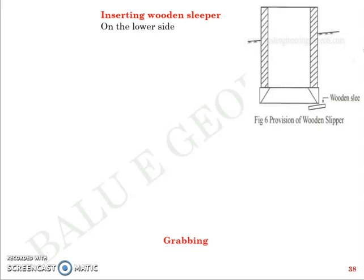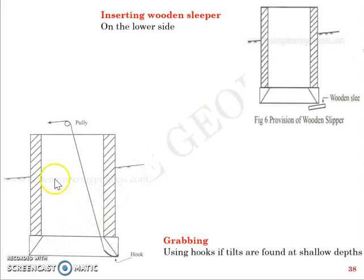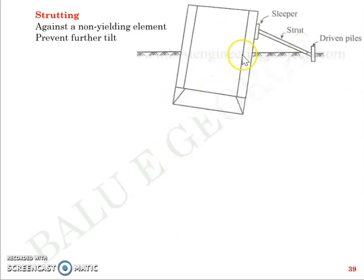Method number four is grabbing using hooks. This is applicable when tilt is expected at shallow depth and may not be practical for deeper tilts. You use a pulley-rope system with a hook to grab the bottom of the well that has a tendency to tilt. Method number five is strutting — introducing a strut to prevent further tilt. A strut carries compression and is placed against the tilting well, anchored to a fixed support such as a driven pile, to arrest further tilting.